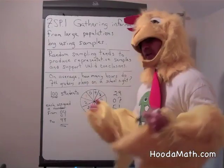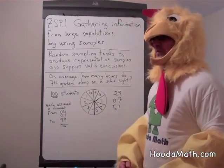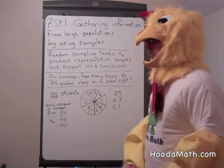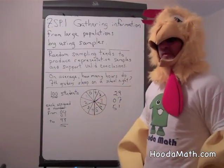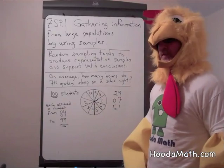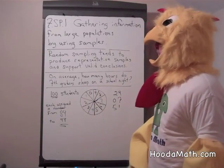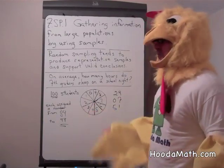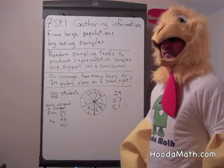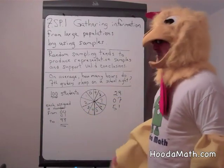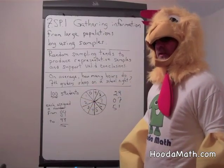Now, if you're not satisfied, if you don't think that's a good enough way of doing it, a more valid way would be to do this again and do a couple of random samples. See how they compare. If they're close, then you feel like that is a very representative sampling of how many hours of sleep a 7th grader gets on a school night.